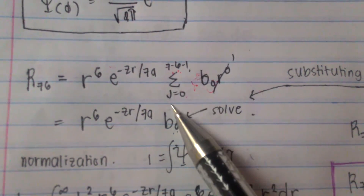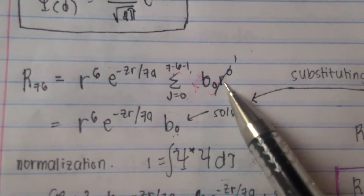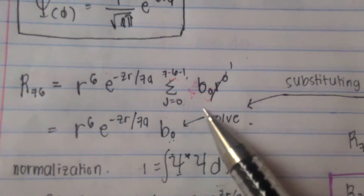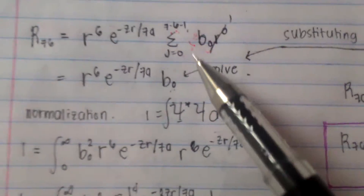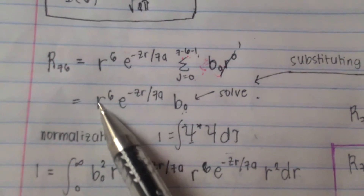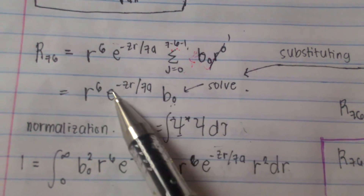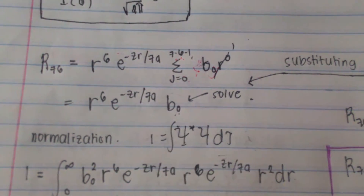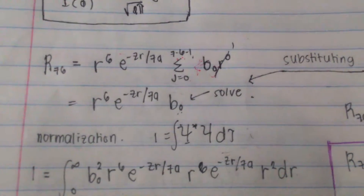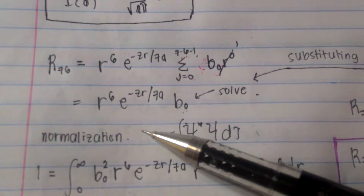Since the summation is 0, rj is equal to 0. So b₀ times r raised to 0, and r raised to 0 is automatically 1. Our value for the radial function is r raised to 6 times e raised to negative zr over 7a times b₀. We can solve for the value of b₀ by using the normalization equation.